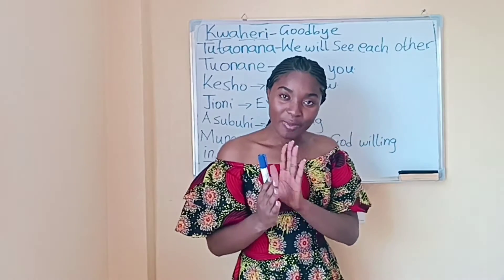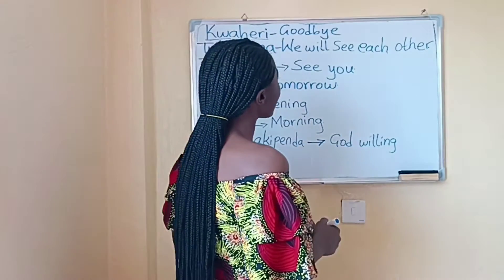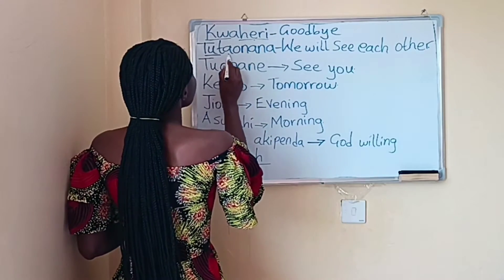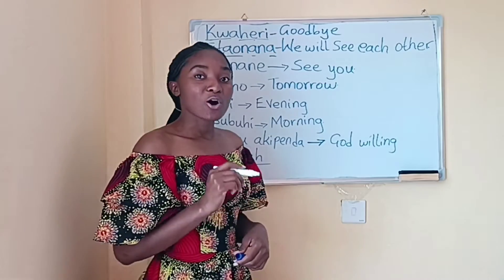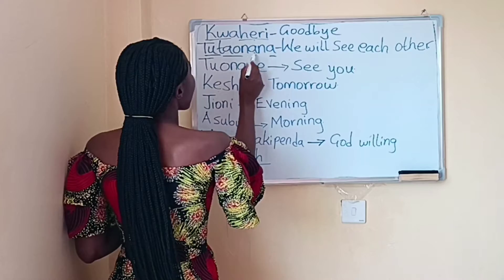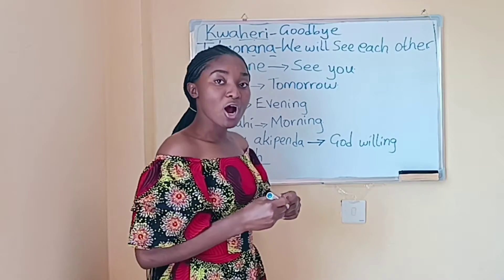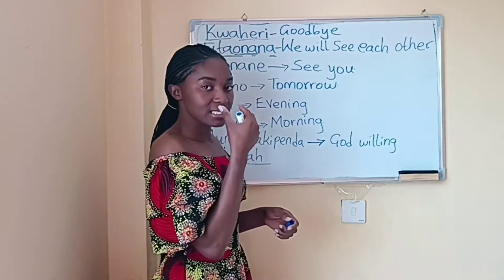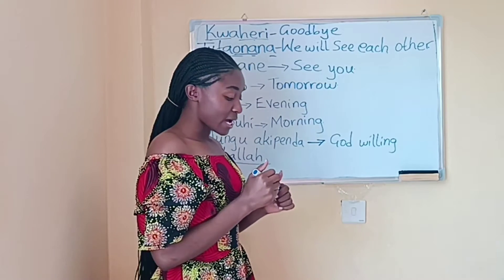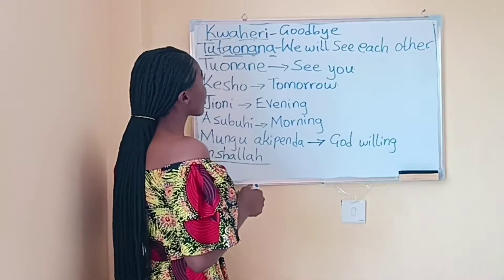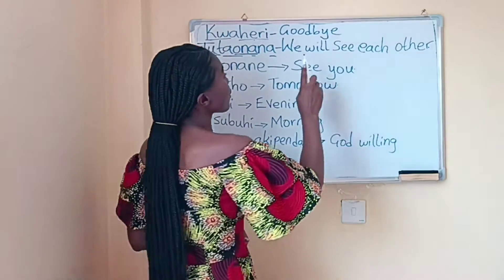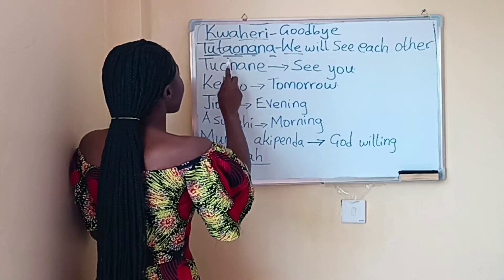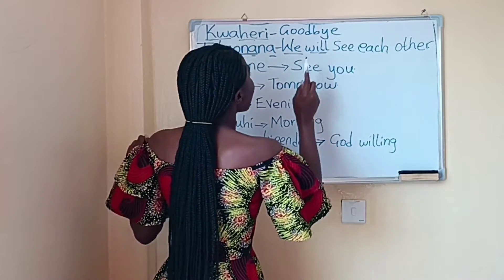There are some words you can add to sweeten the goodbye before leaving. The second phrase we have is tutaonana. This word comes from the root word ona, which means 'see' in Swahili. So if you combine tutaonana, it means 'we will see each other.' The 'tu' stands for 'we,' and the 'ta' stands for 'will' — indicating future tense.